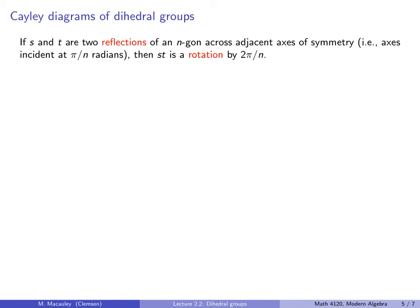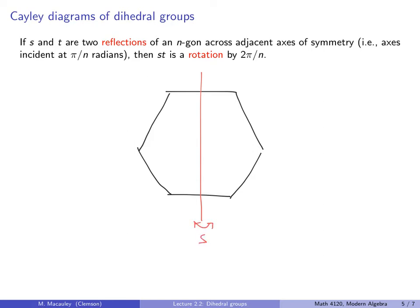I want to show you another way to generate and also to think about and visualize dihedral groups. If S and T are two reflections of an N-gon across adjacent axes of symmetry — let me draw what I mean. Suppose S is the reflection about this axis, and T is the reflection about that axis. When I say adjacent, there are six axes of reflection, and by adjacent I mean this angle here is π over 6. Then ST is a rotation: if you reflect across S and then across T, you actually get a rotation.